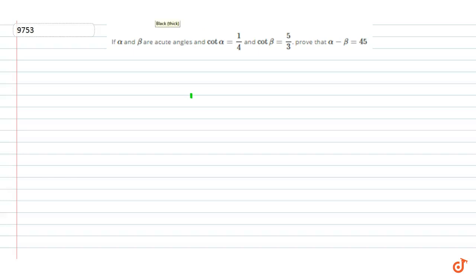In this question, if α and β are acute angles and cot α is equal to 1/4, cot β is equal to 5/3, prove that α minus β is equal to 45 degrees.